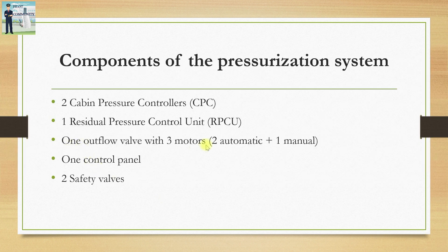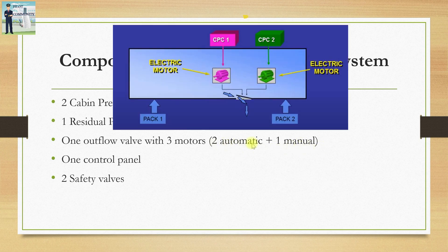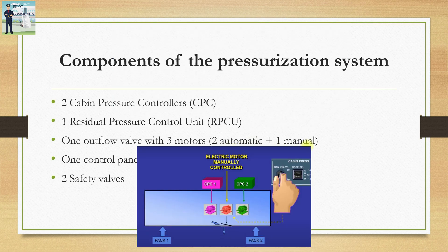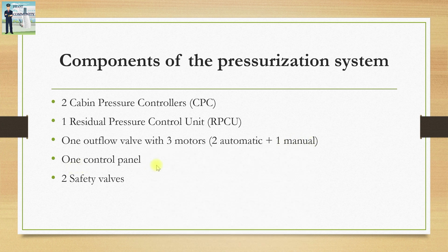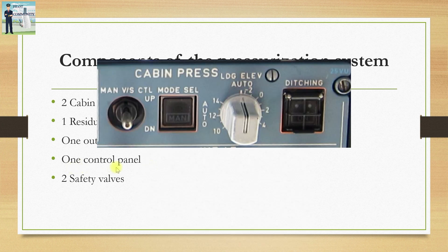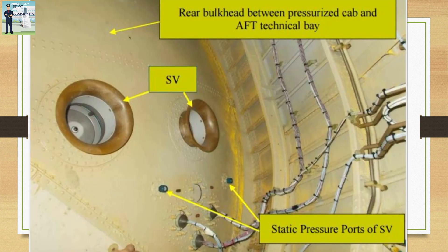We have one outflow valve with three motors, two of which are automatic and one operates in manual mode. The two automatic motors receive signals from the two cabin pressure controllers, and the one in manual mode receives signals directly from the cockpit panel. There is also one control panel in the overhead panel of the cockpit, used in abnormal scenarios, and two safety valves at the rear pressure bulkhead which cannot be viewed from outside the aircraft.